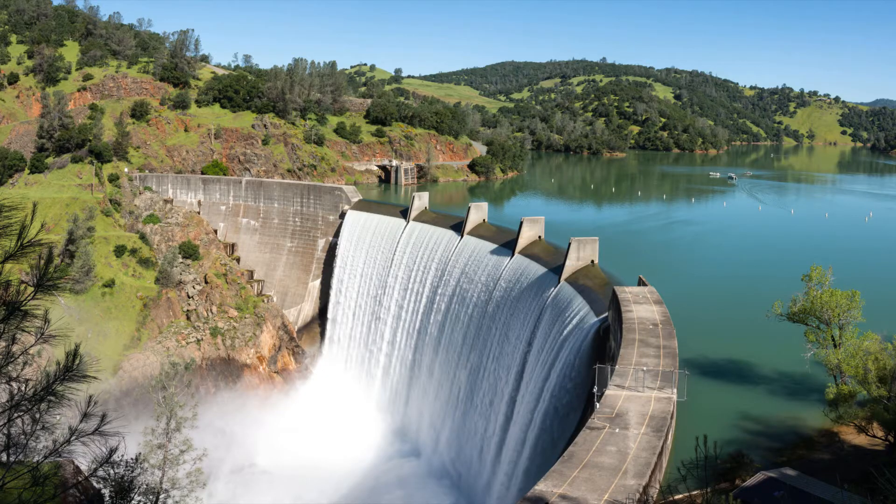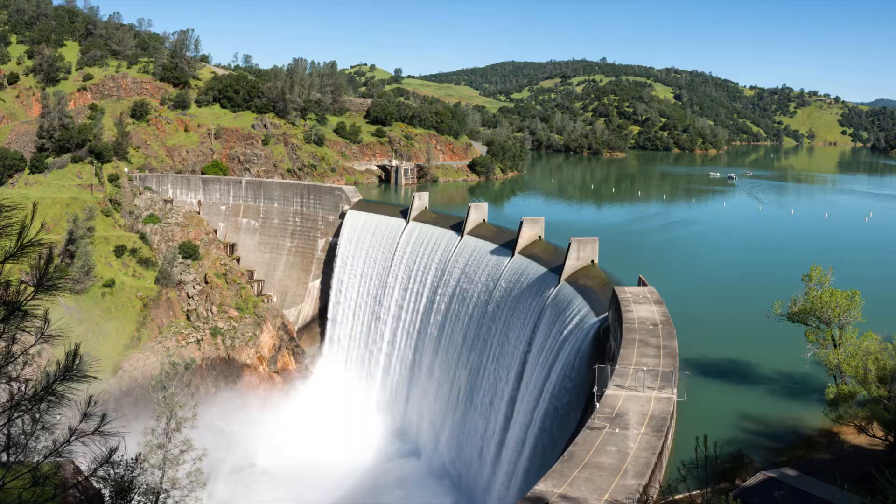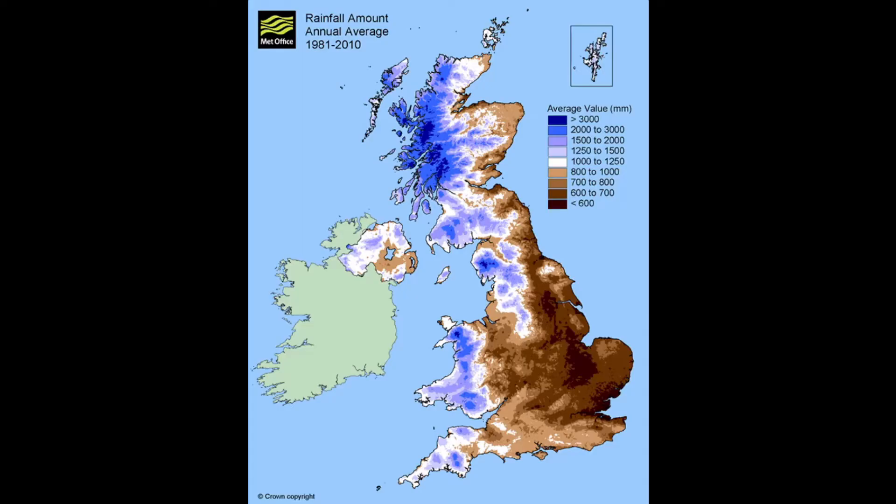The easiest way to collect a large volume of water is to dam a river. But the terrain in the Midlands doesn't lend itself to dam building. Birmingham also, relatively speaking, doesn't get that much rain.